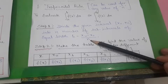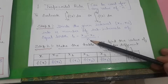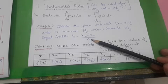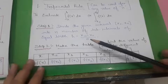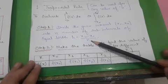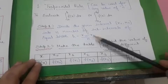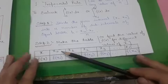In Simpson's 1/3 rule, you had to choose an even number of intervals. In Simpson's 3/8 rule, you have to take the number of intervals as a multiple of three. That is the key difference in step one.